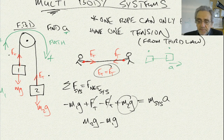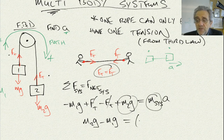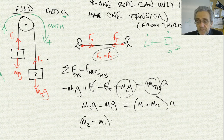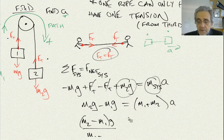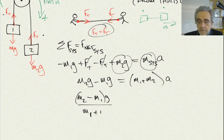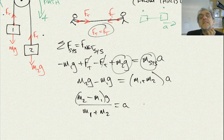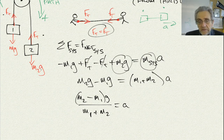The total mass of the system is just both masses put together. I set the net force equal to the total mass times acceleration: M2G minus M1G equals M1 plus M2 times A. I can solve for A by dividing both sides by M1 plus M2, and factoring out G. That gives me A equals G times (M2 minus M1) divided by (M1 plus M2). That's the acceleration for both masses — mass 1 going up and mass 2 going down.